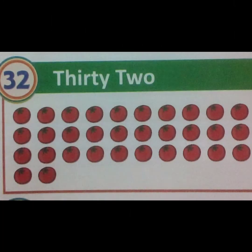Okay, which number is this? 32. Okay, how many tomatoes are here? 32. Very good. What is the spelling of 32? T-H-I-R-T-Y-T-W-O. 32.